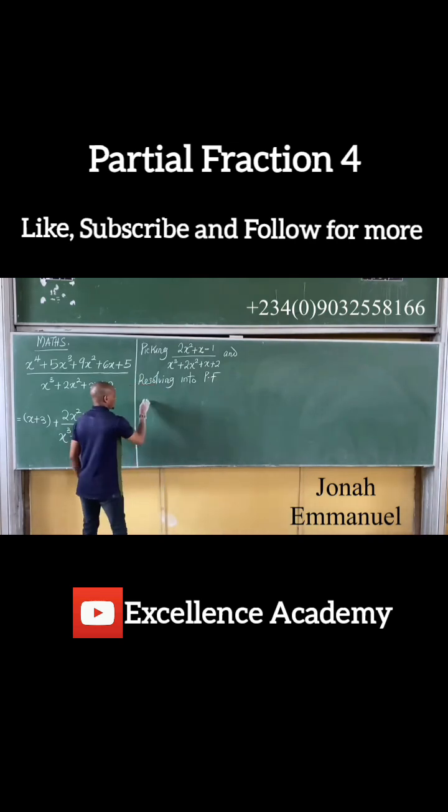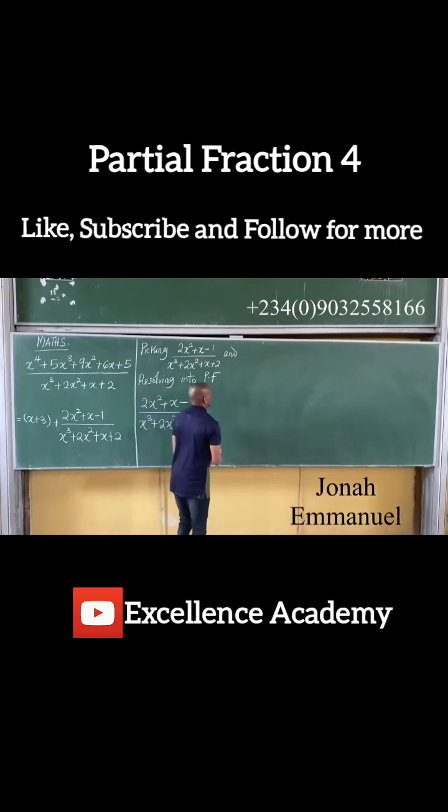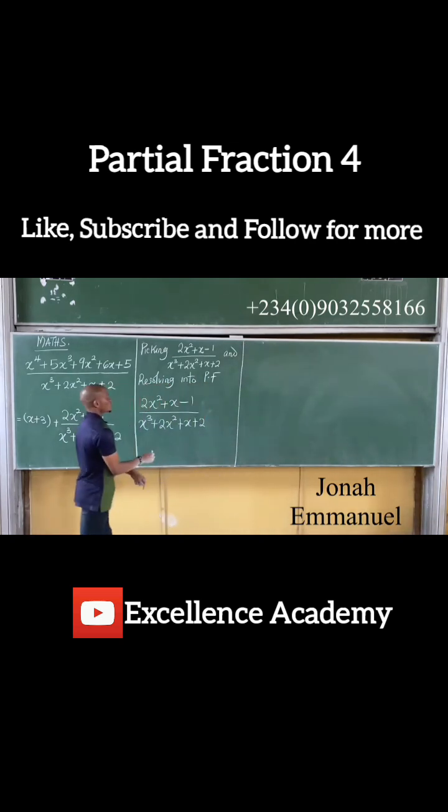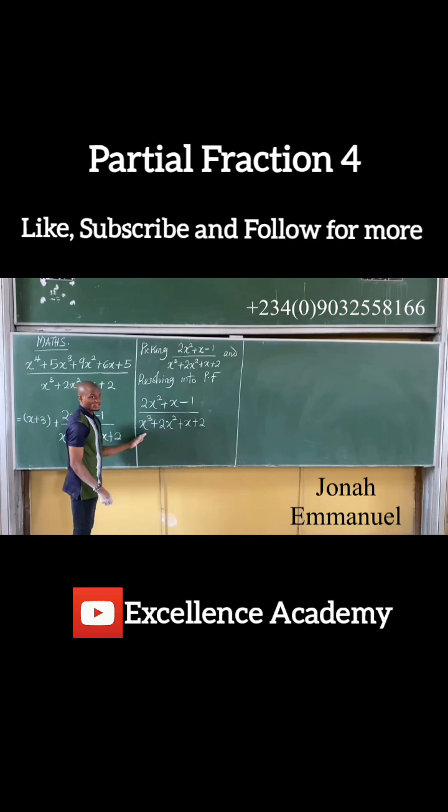So I now have 2x squared plus x minus 1 all over x cubed plus 2x squared plus x plus 2. So we said whenever it comes to resolving the partial fractions, observe that the degree of numerator is now less than the denominator. So I can now resolve.